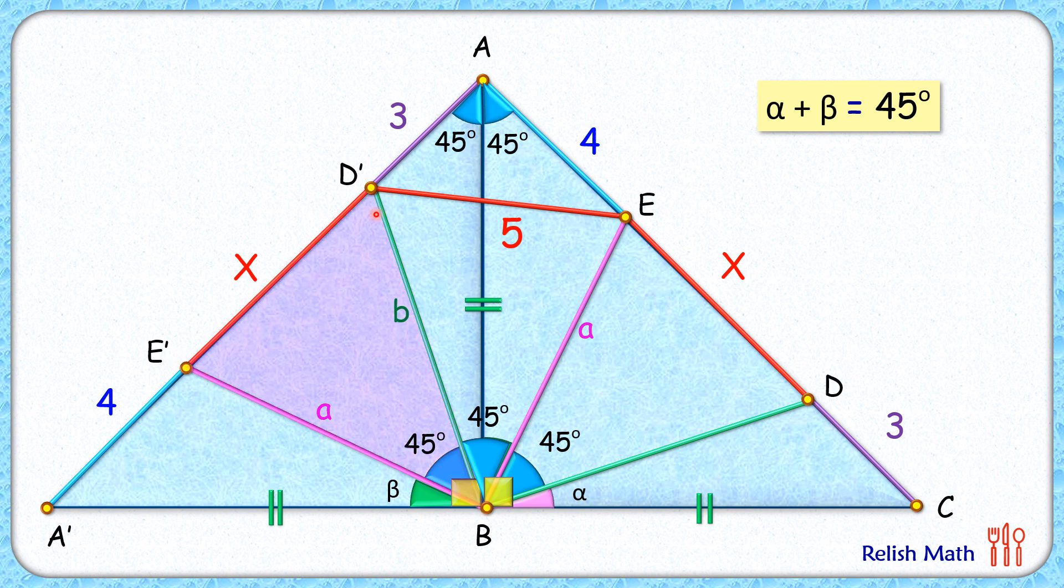Now if you look at this pink triangle and this yellow triangle we can say that by side angle side both have got A centimeter, 45 degrees, and B centimeter. The triangles are congruent and thus by corresponding parts we can say that X is nothing but 5 centimeter and that's our answer.